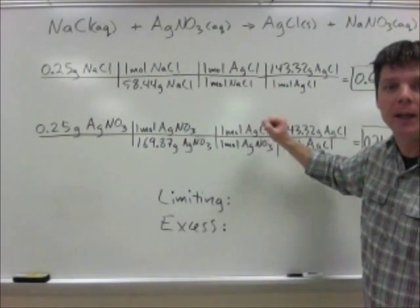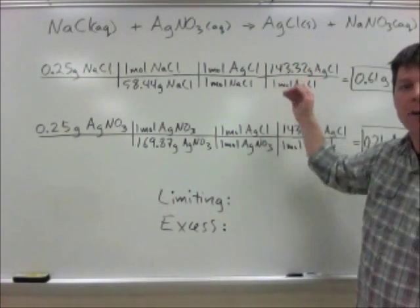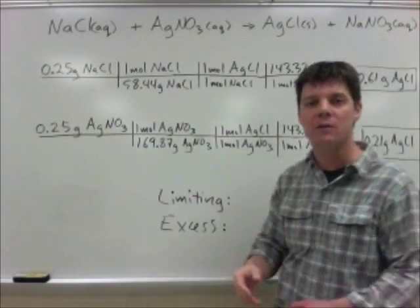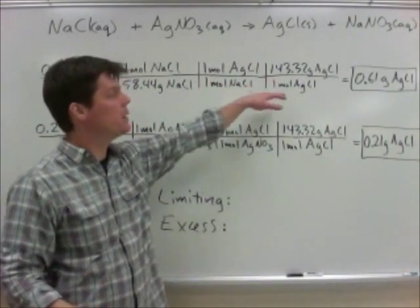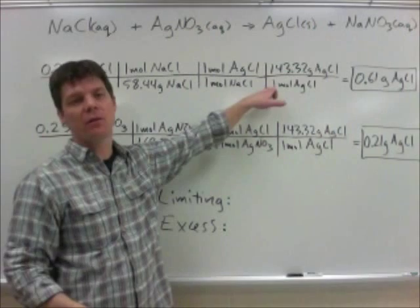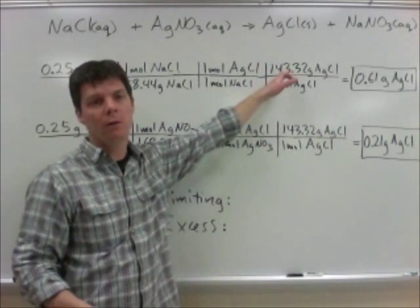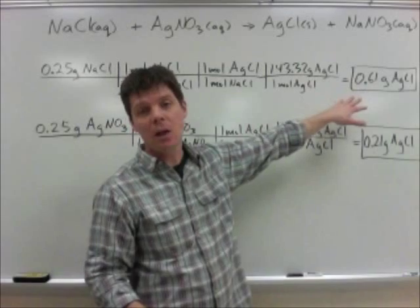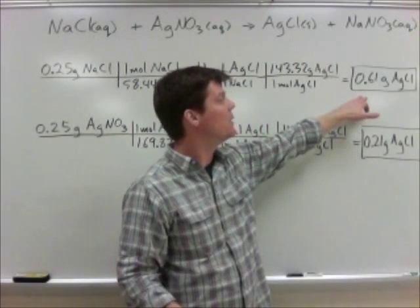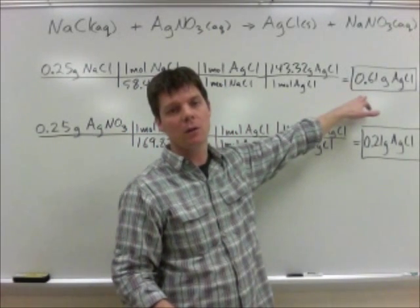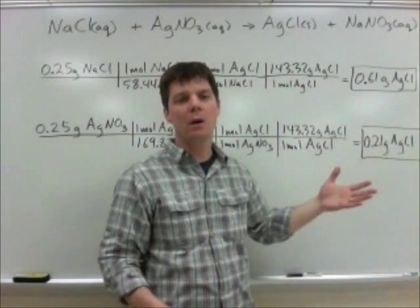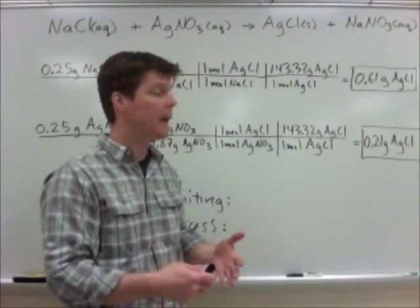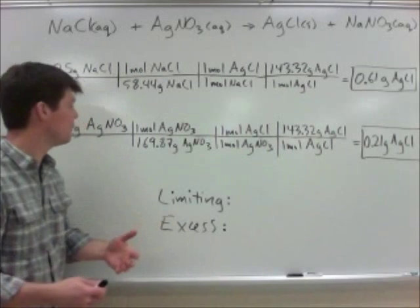That's in the bucket. My final step is to get back out of the bucket, where I'm going to convert back using molar mass. To complete this step, I need to know the molar mass of silver chloride, which is 143.32 grams. Based on this, I would say I can make 0.61 grams of silver chloride. Now we want to also evaluate how much we can make based on the starting amount of the other reactant, the silver nitrate.